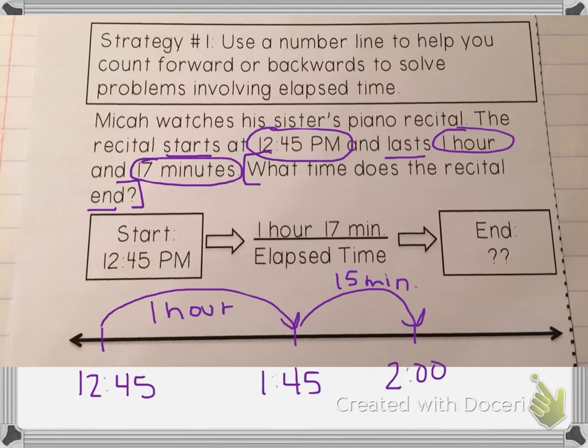Now I need to go 2 more minutes. So that's going to be a little jump. So that's 2 minutes. And 2 minutes after 2 o'clock would be 2:02. It's still p.m. It's not going to end at 2 o'clock in the morning. So our answer would be 2:02 p.m.